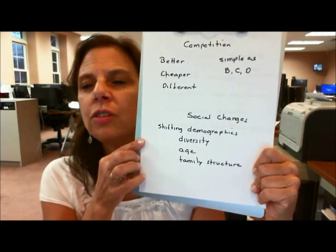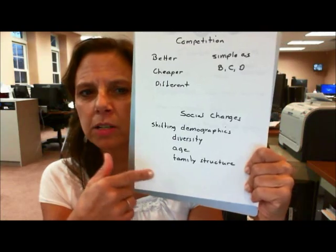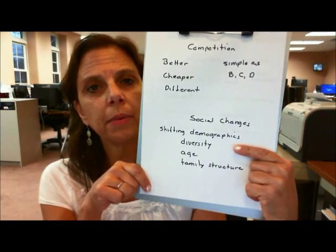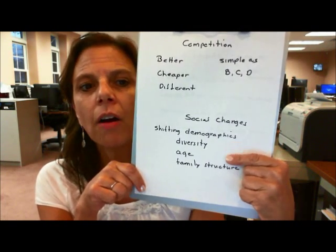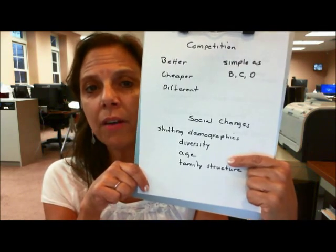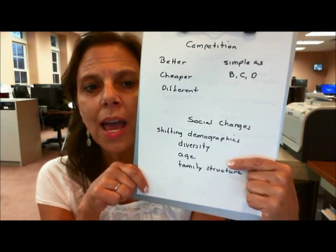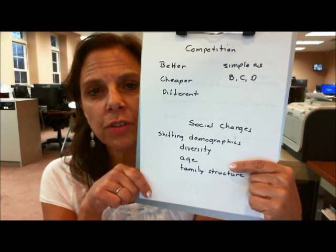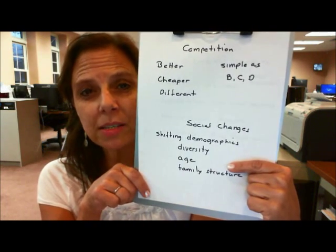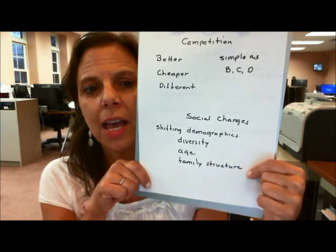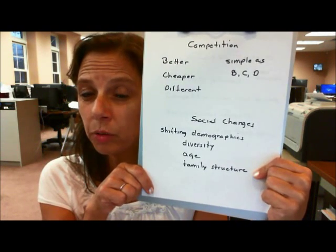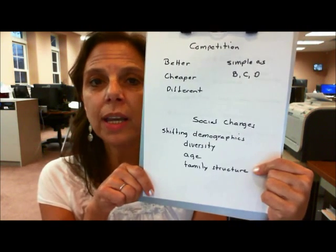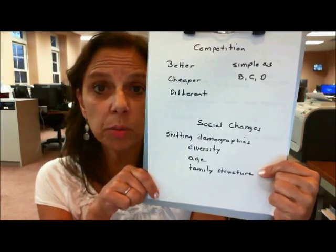Social changes: shifting demographics are the main thing we want to be concerned about. We have a much more diverse population, and that's affecting our workforce, as well as our customers and consumers. Our population is aging — many more people who are older — and that's going to affect what we offer as goods and services, how much people can pay, and who can support social services and social security. Family structure is also very important, with many single-parent households affecting working conditions and consumer preferences.